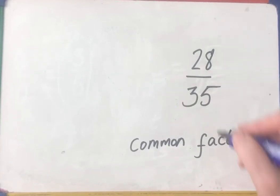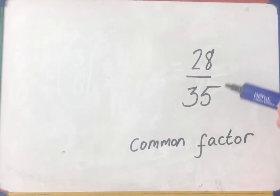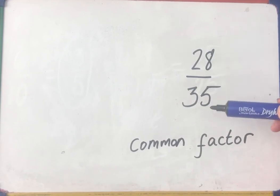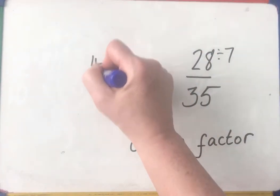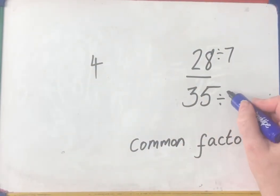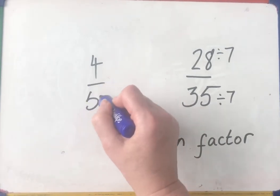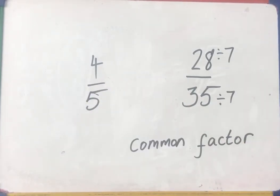A number that shares into them without leaving a remainder. Well, I can't divide the top and bottom by 2 but I do know my 7 times tables. So 7 into 28 goes 4 and 35 divided by 7 is 5. So 28/35 in its simplest form is 4/5.